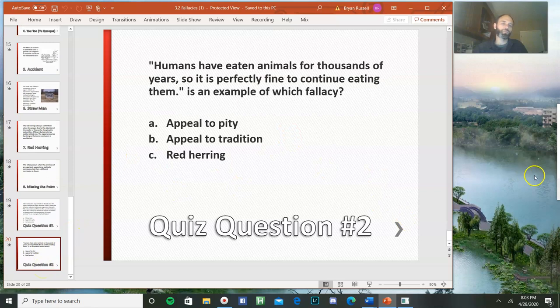Quiz question number two: Humans have eaten animals for thousands of years, so it is perfectly fine to continue eating them. That argument is an example of which fallacy? A, appeal to pity, B, appeal to tradition, or C, a red herring?